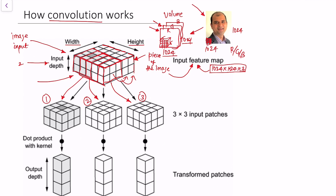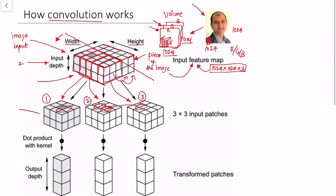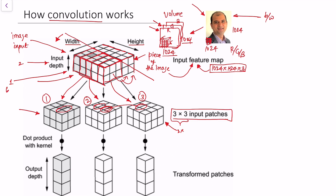We can see there's a lot of overlap between these pieces. These are called 3 by 3 input patches. When we say 3 by 3, it's important to note we do not refer to the number of channels — in this case 2. We don't consider that a big deal because depending on how you frame the input image, you could have 1 channel, 3 channels, or more. For example, if the image were black and white, the input depth would be 1.